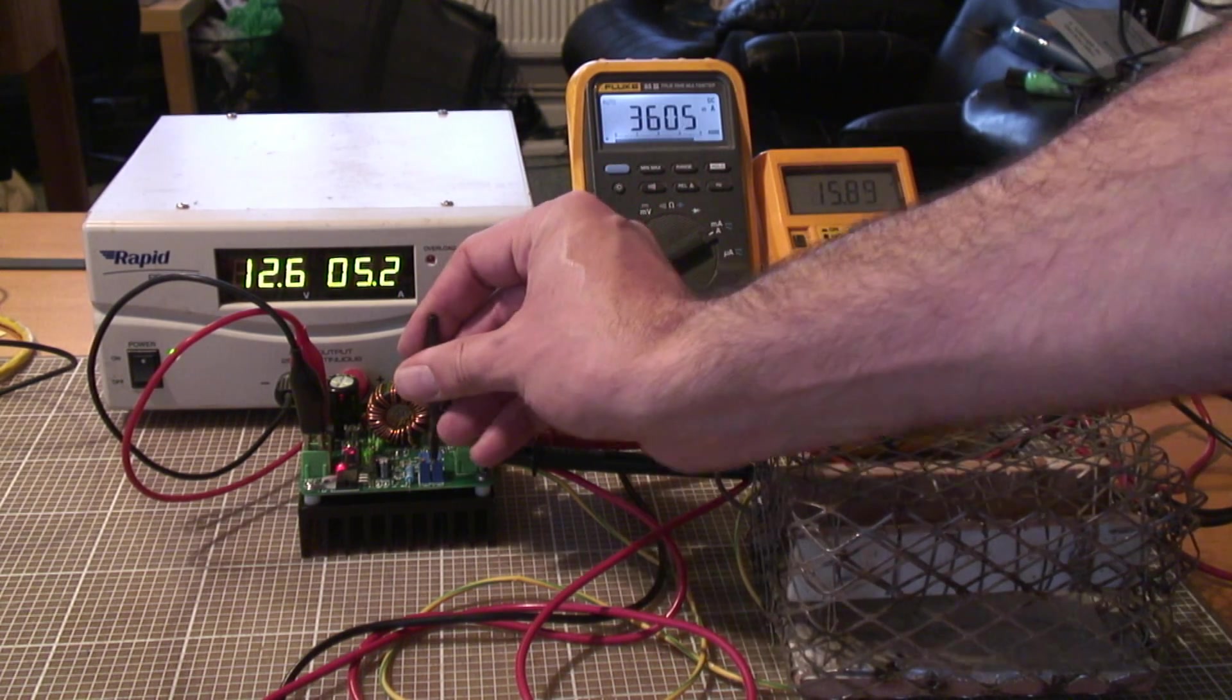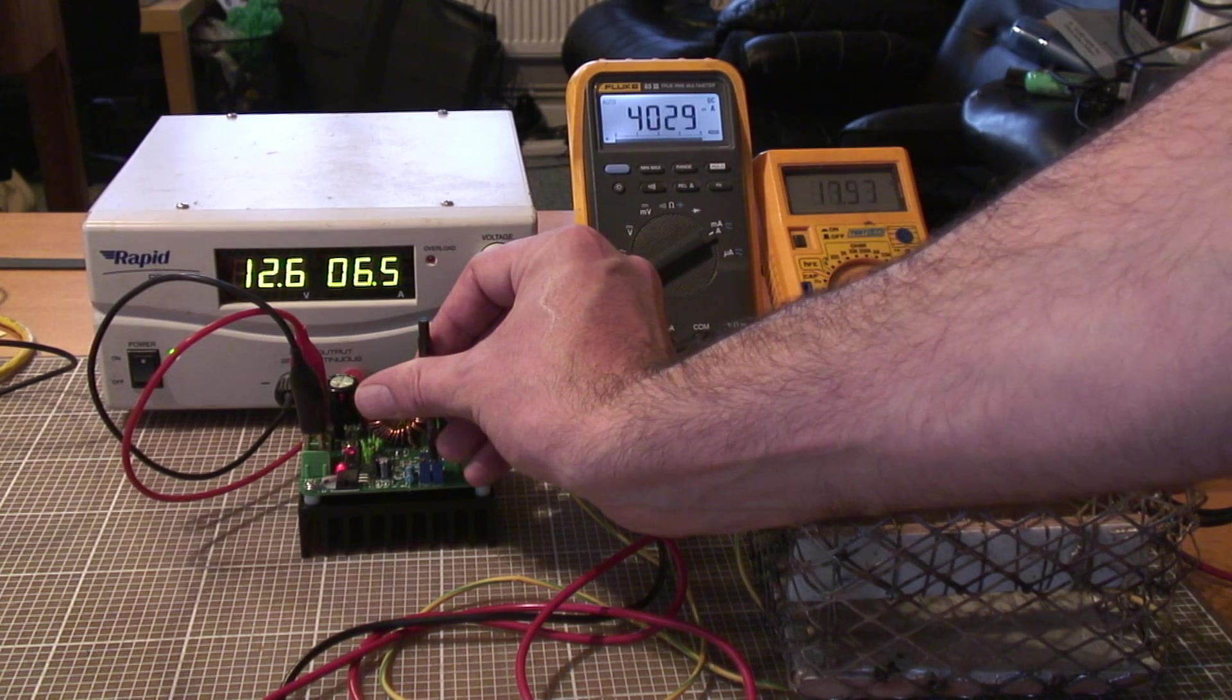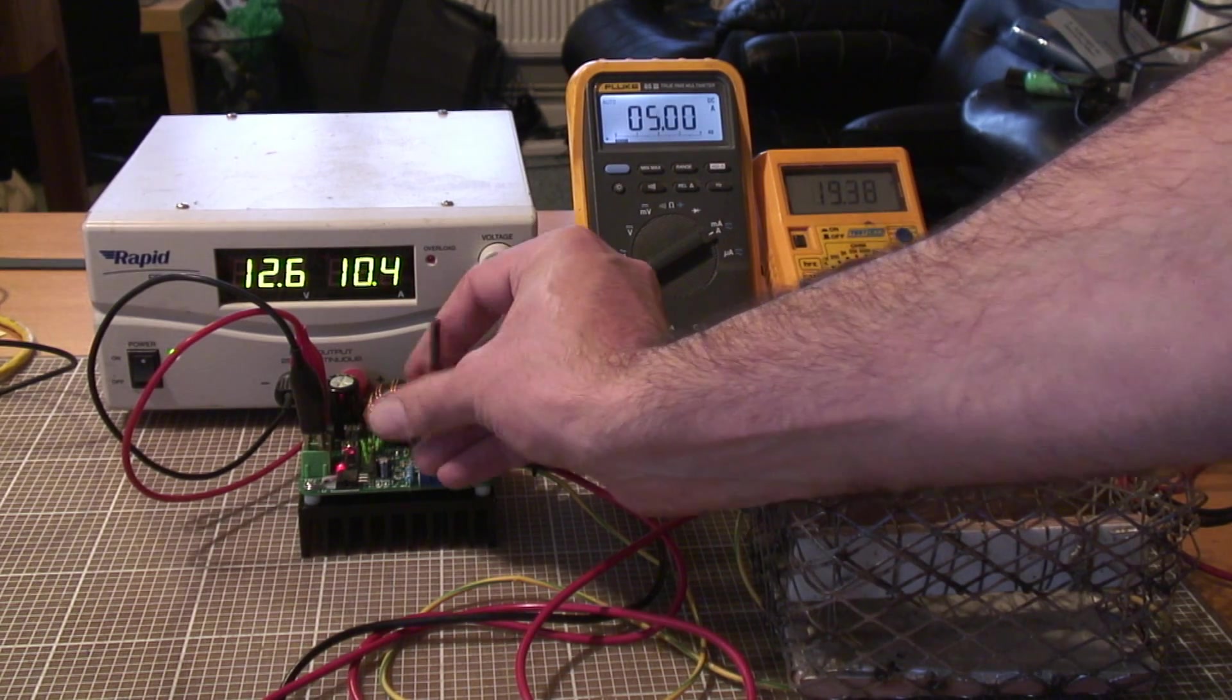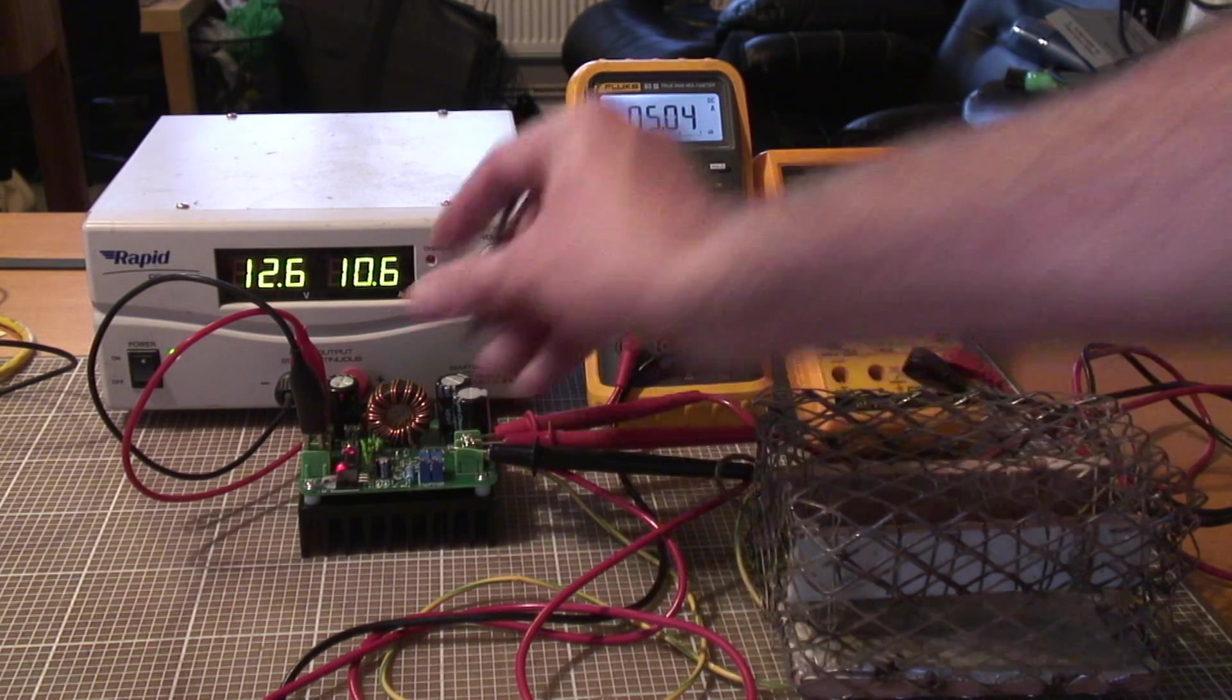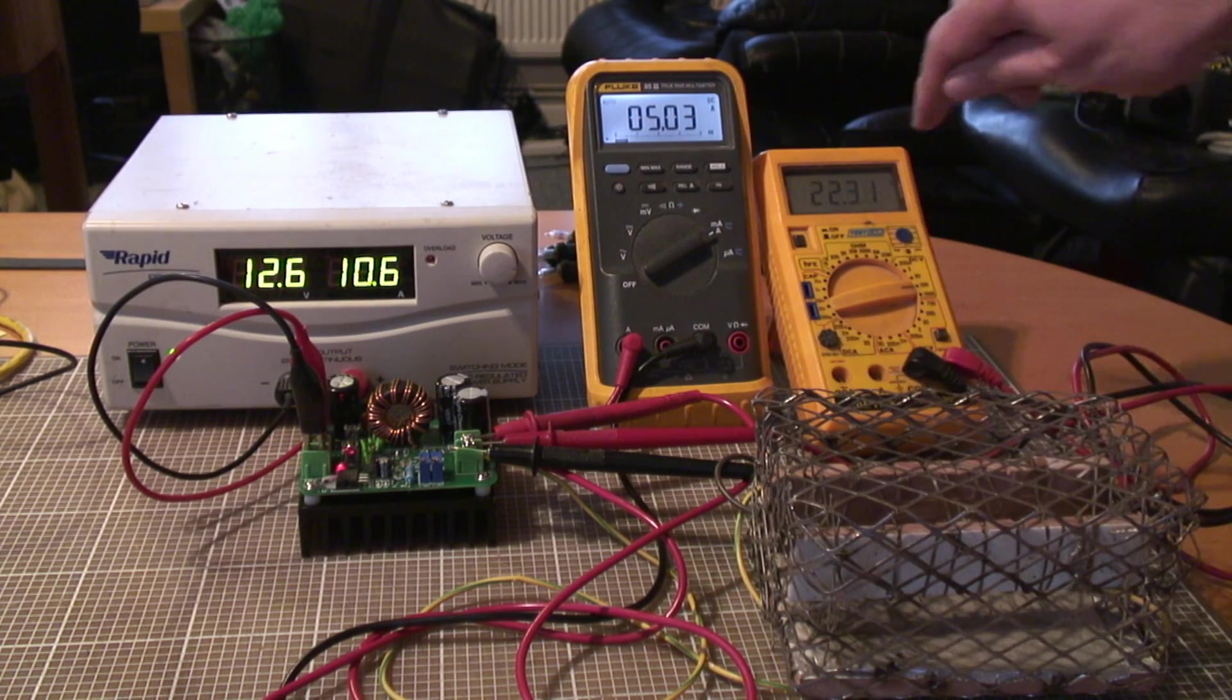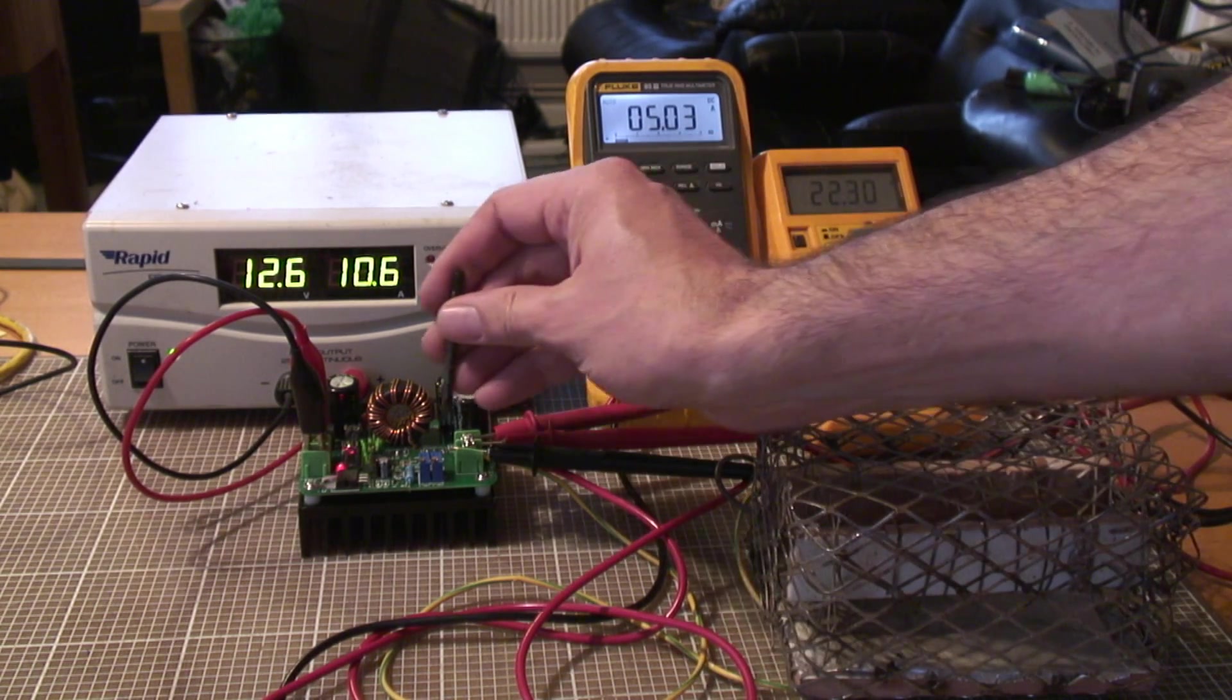And if I wind the voltage up a bit, there should be a 5 amp current limit I've set on this. And there we go, we've hit our current limit, 5.04 amps. And we're putting out 22 volts, 5 amps. So that's just over 100 watts, 110 watts there.